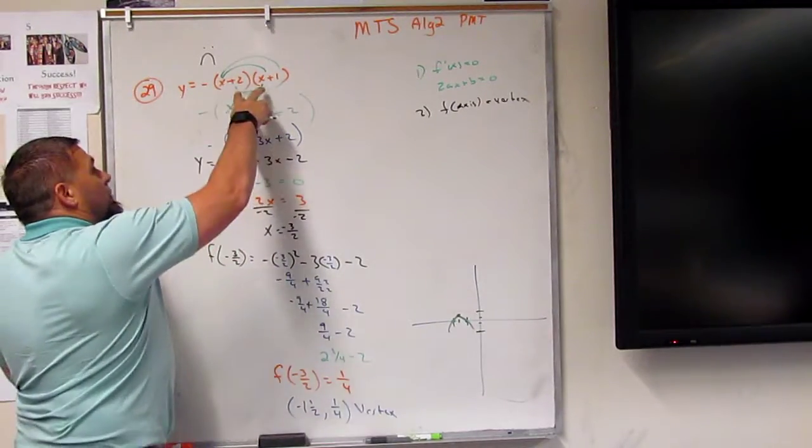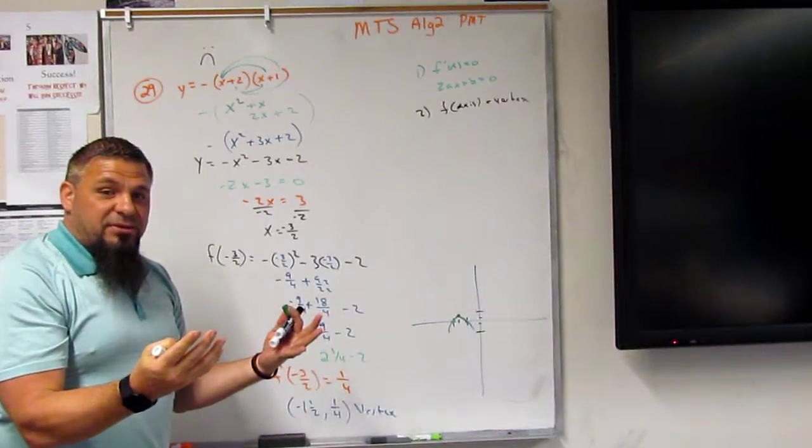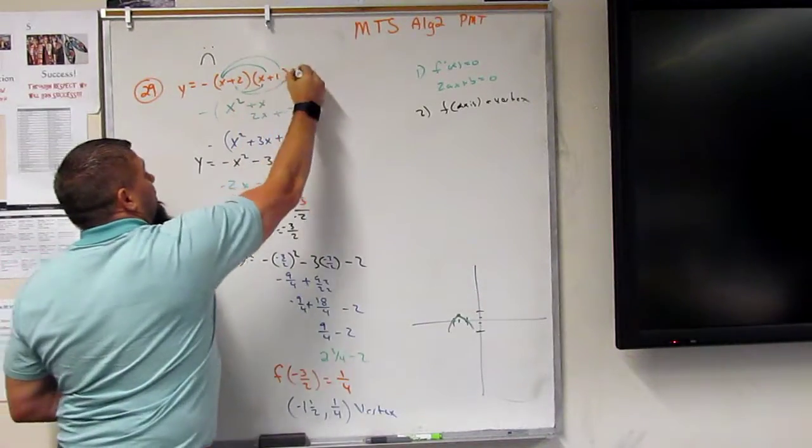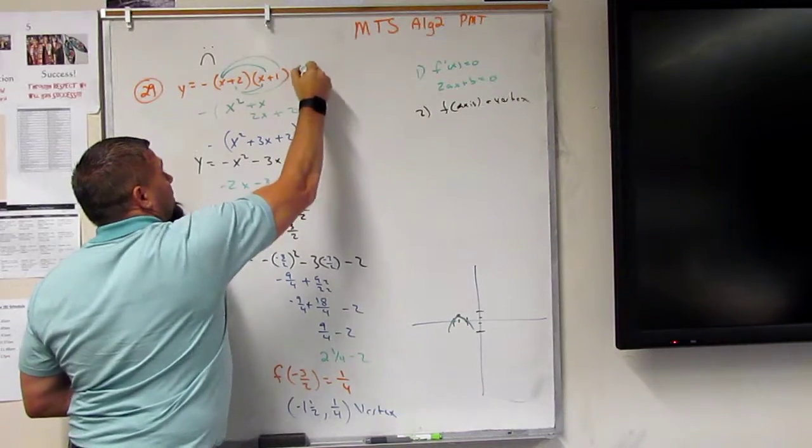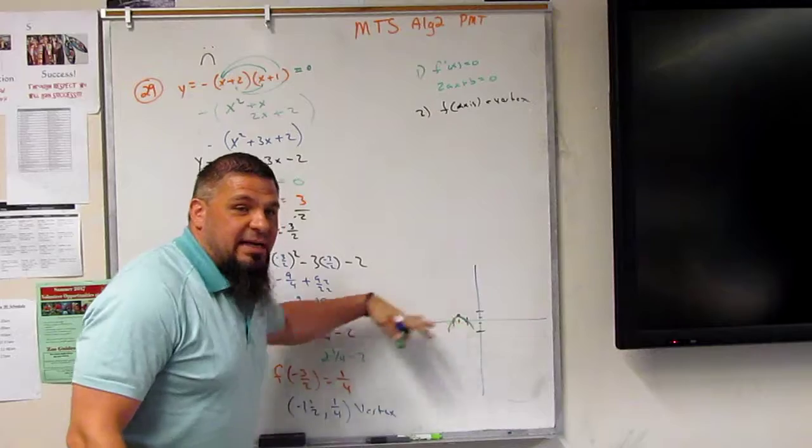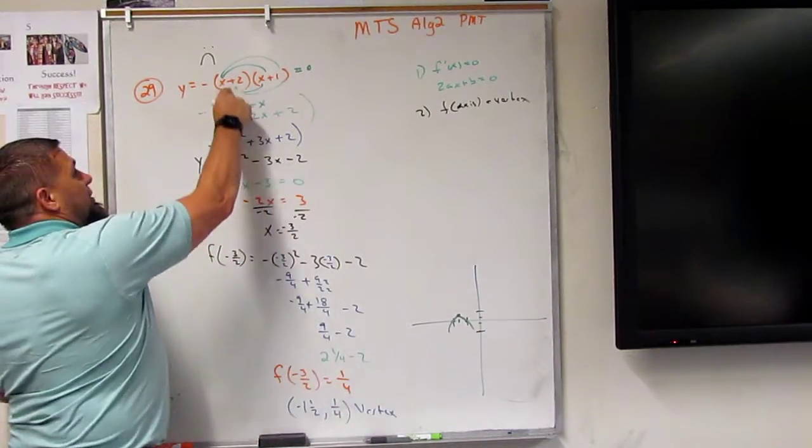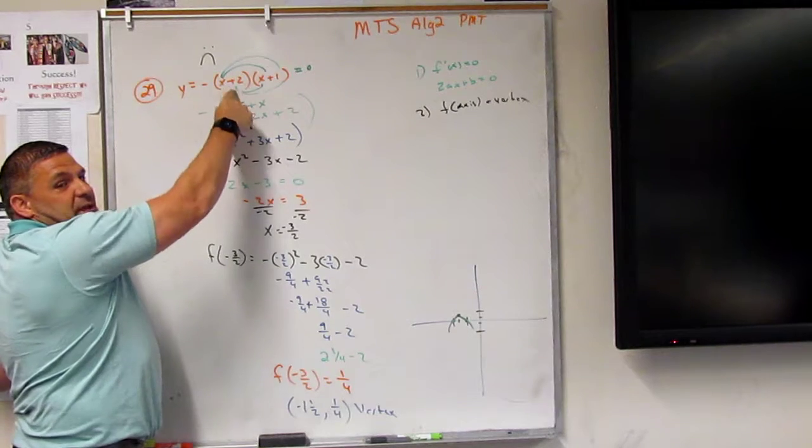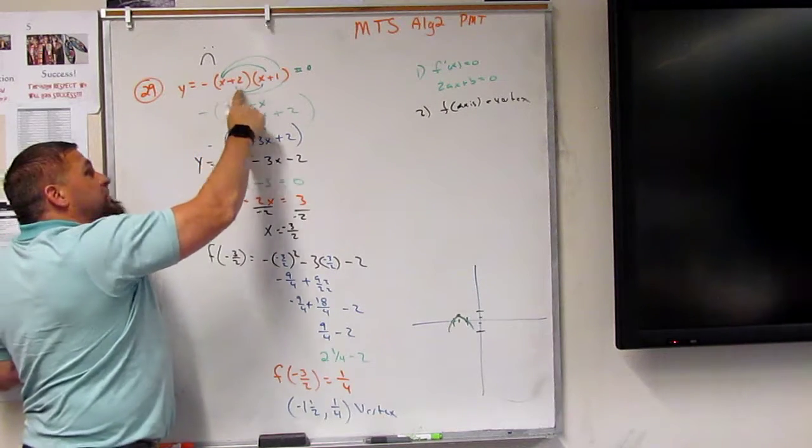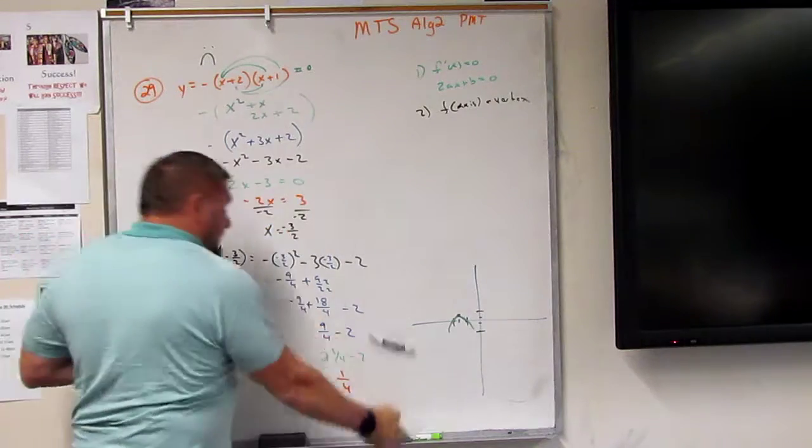And remember, if we factor it and set it equal to 0, right? Because 0 is where, if Y is 0, then that's going to be your x-axis, or x answers for 0, right? And then you just set this equal, what's going to make this 0? Negative 2, right? What's going to make this 0? Well, negative 1.